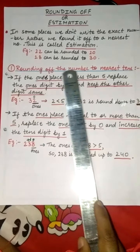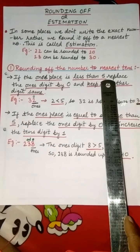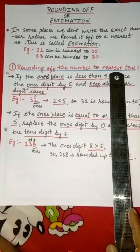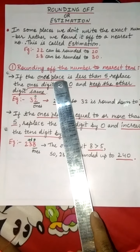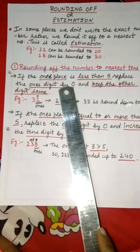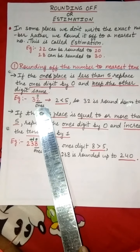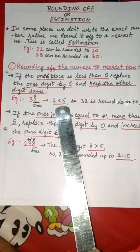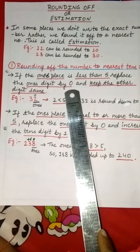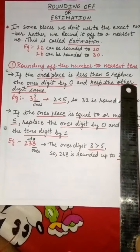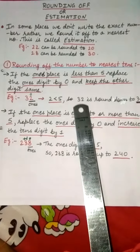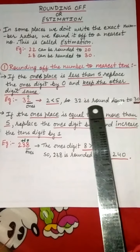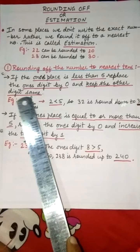There are certain rules to follow in rounding off numbers. Rule 1: if the ones place digit is less than 5, replace the ones digit by 0 and keep the other digits the same. For example, 32. The ones place digit is 2, and 2 is less than 5. So we replace 2 by 0 and keep 3 the same. The number 32 is rounded down to 30.